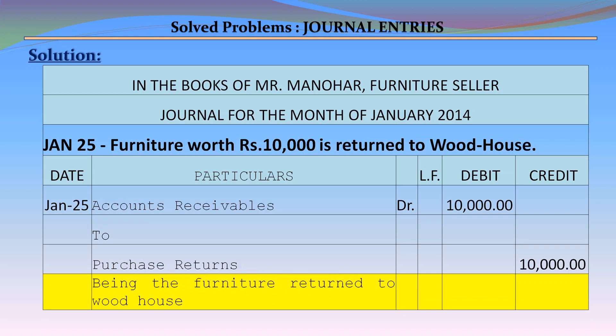January 25 – Furniture worth Rs. 10,000 is returned to Woodhouse. Journal entry: Accounts Receivable debit Rs. 10,000 to Purchase Returns credit Rs. 10,000, being the furniture returned to Woodhouse.